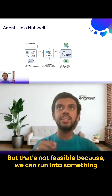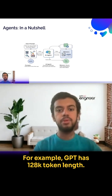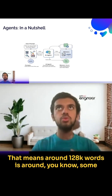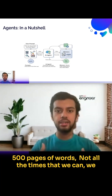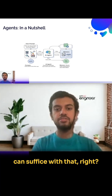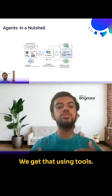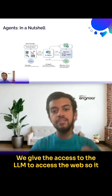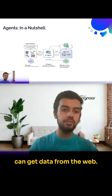That's not always feasible because we can run into a context length issue. For example, GPT has a 128k token length — that's around 500 pages of words. But not all the time can we suffice with that; we need a lot more context. We get that using tools, like a web search tool, giving the LLM access to the web so it can get data from there.